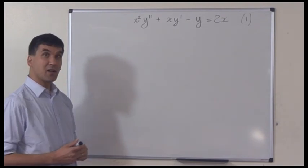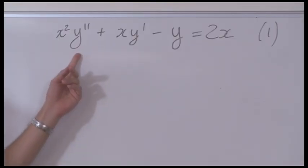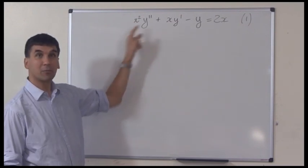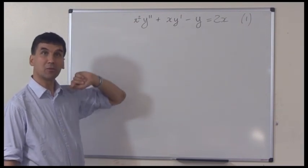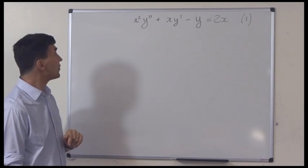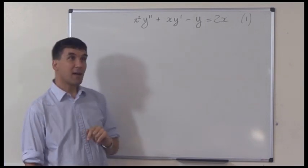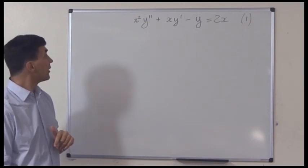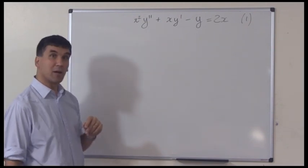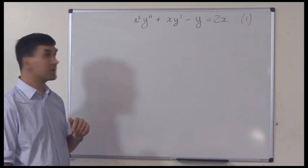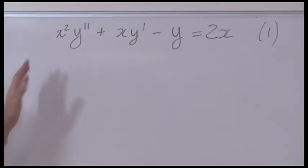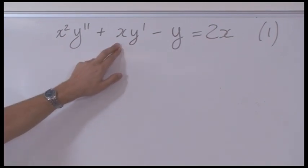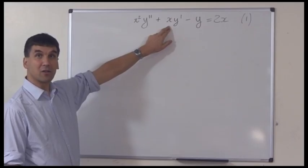You can see that it's a second-order equation — it's got two derivatives. You can also see it's linear because there's no products of y with y prime, or y double prime squared, or anything like that. So you might think that the technique of finding the characteristic equation might work for this equation. But it doesn't, because the coefficients of y double prime and y prime are not constants — they're functions of x.